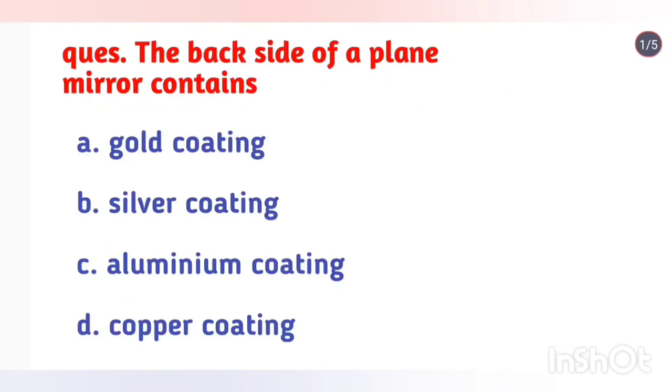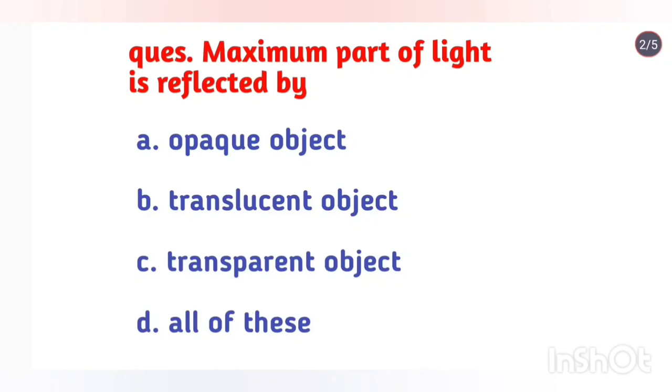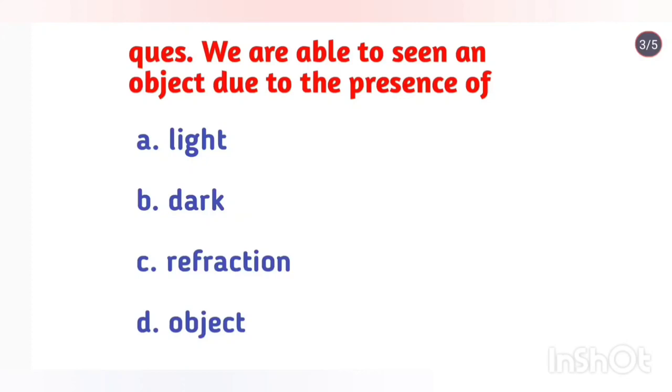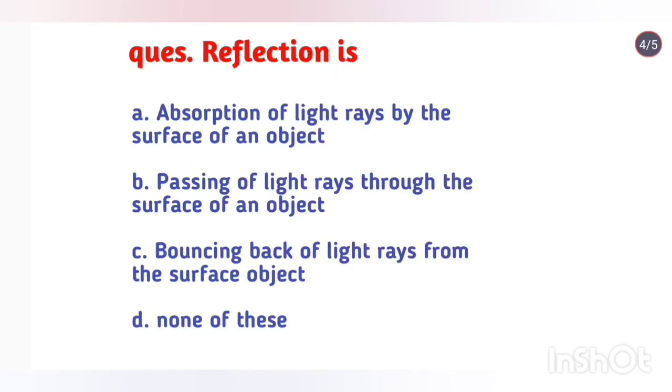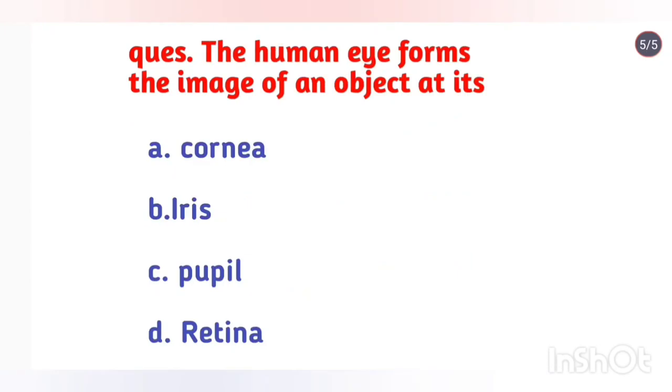The back side of a plain mirror contains silver coating. Maximum part of light is reflected by opaque object. We are able to see an object due to the presence of light. Reflection is bouncing back of light rays from the surface object. The human eye forms the image of an object at its retina.